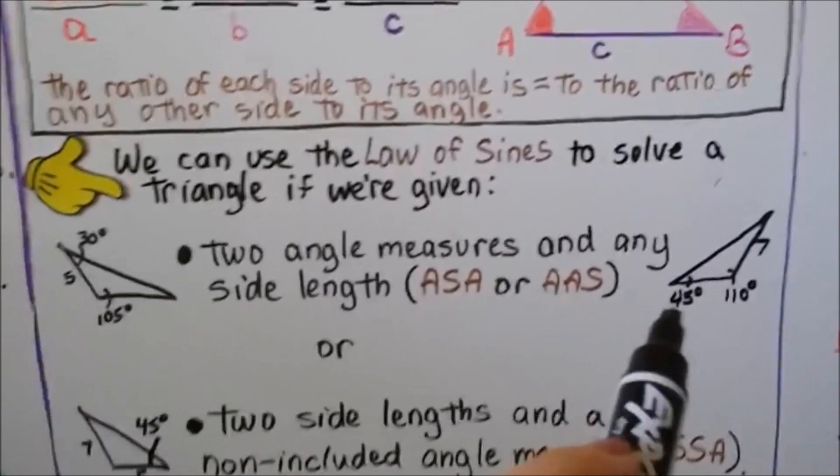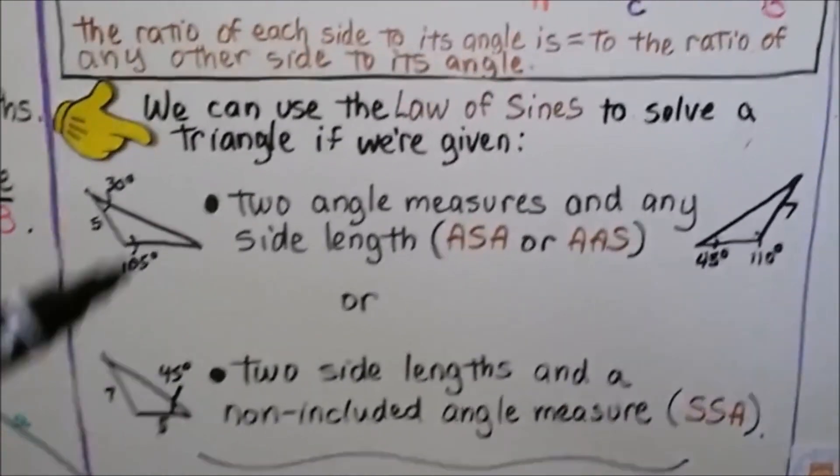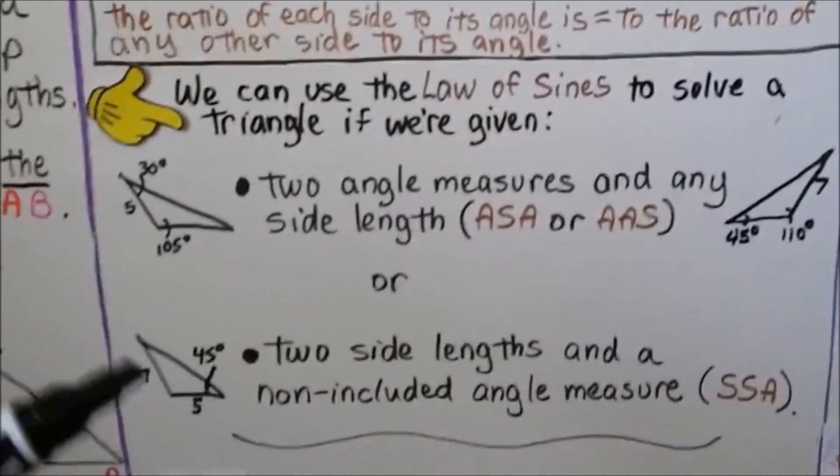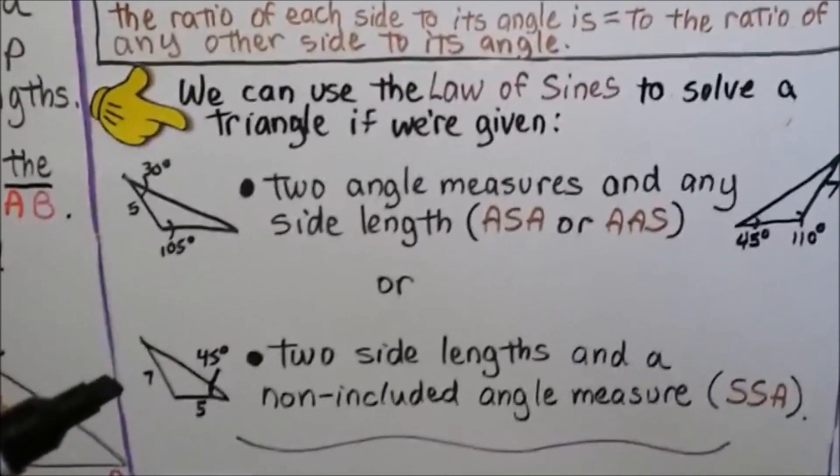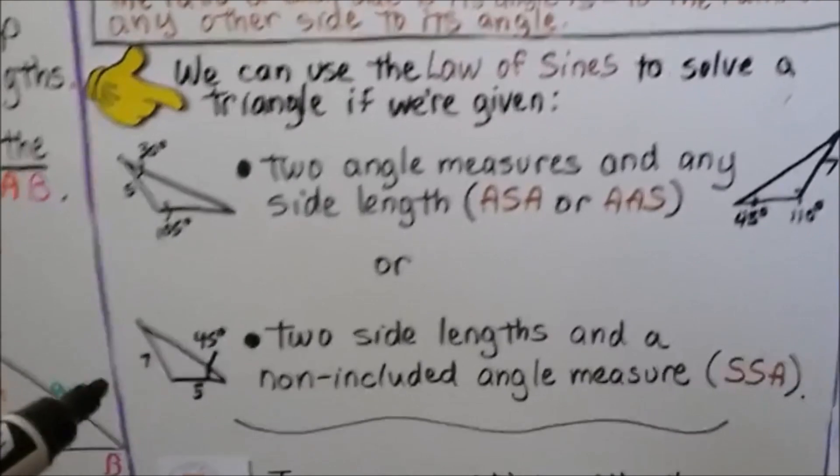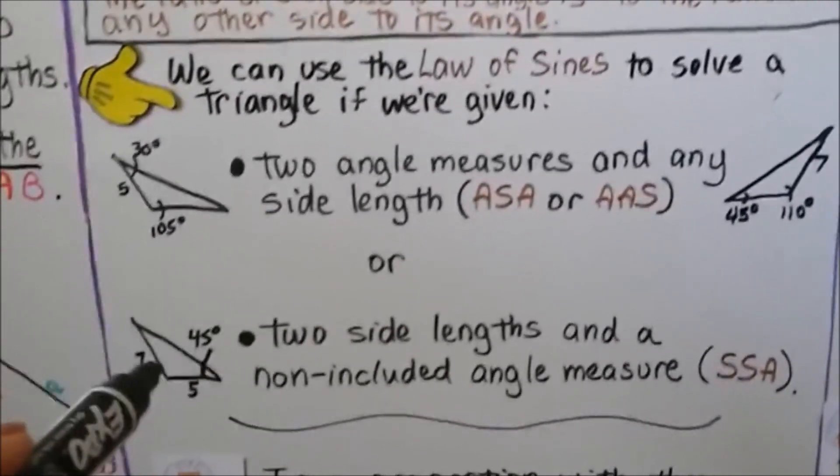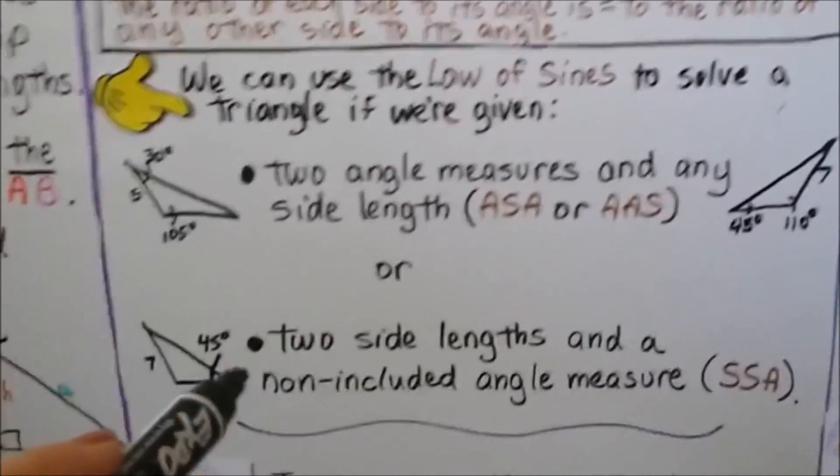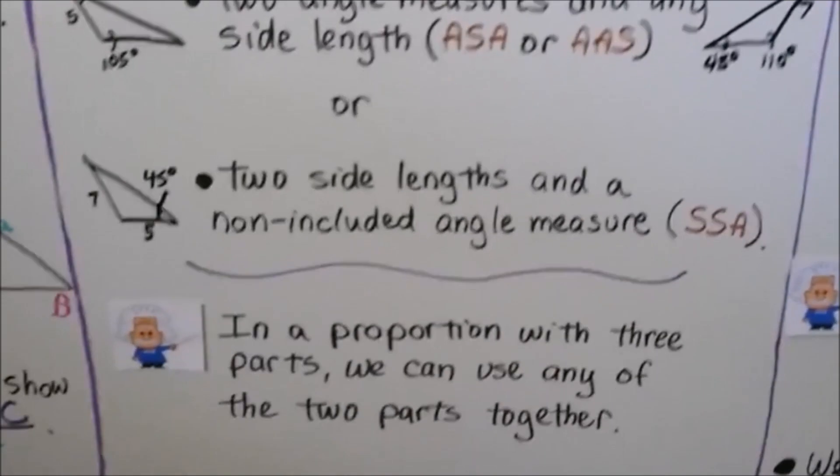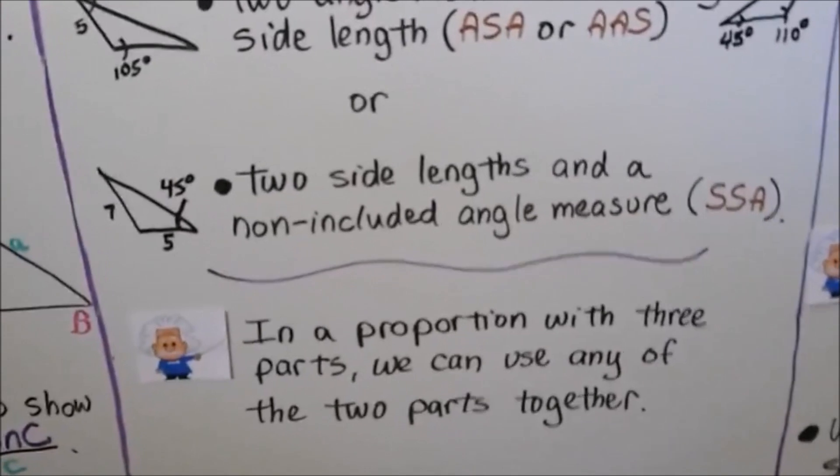Over here, we're given an angle, an angle, and a side. We could use the law of sines to solve the triangle with this information. Also, we can do two side lengths and a non-included angle measure. Notice it says non-included. This would be SSA. We have a side, a side, and an angle. Notice that it's not the angle in between the 7 and 5. It's this one out here. We could also do it with this one if we have it. And in a proportion with three parts, we can use any of the two parts together.